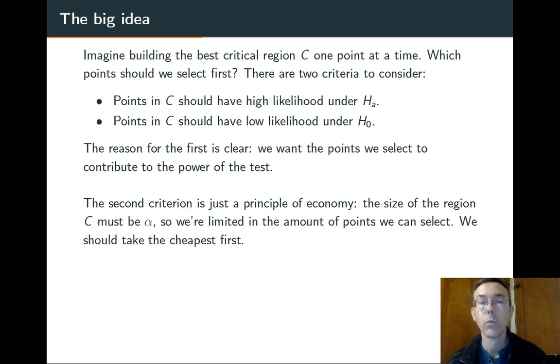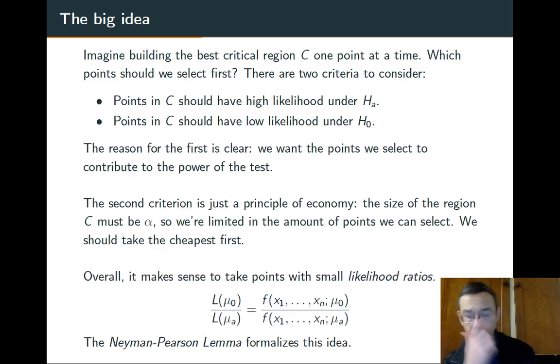So this is a principle of economy. The restriction on the size of the critical region, alpha, means that we only have so much space to work with. And so when we choose points to put in C, we want to try and be, try and take the cheapest first, the ones with the lowest cost. So summarizing all of this, it makes a certain degree of sense that we want to take points with small likelihood ratios.